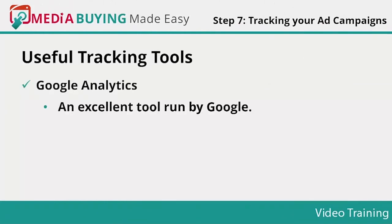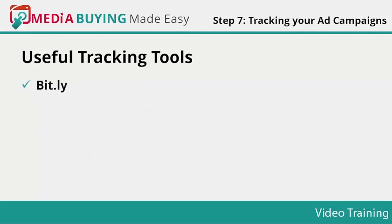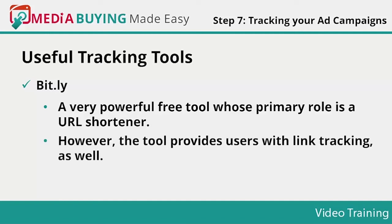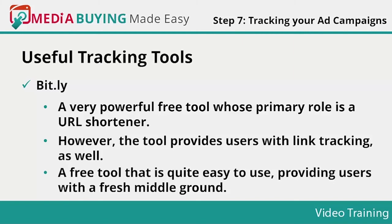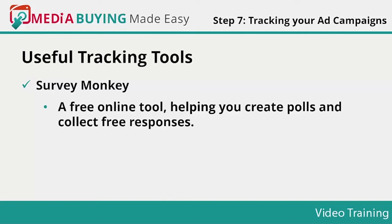URL tagging improves the value of every campaign — if you have set goals in your tracking tool, it reports on every specific campaign's conversion metrics. It's important that you neatly separate data in your tracking tool, otherwise data will not attribute to a particular channel. Useful tracking tools: Google Analytics — an excellent tool that allows users to grab vital information concerning their website visitors, tracking statistics including traffic sources such as paid search, organic search, and social media platforms, along with data about viewed pages, time spent on site, exit page, and demographic information. Bit.ly — a powerful free URL shortener that also provides link tracking, easy to use for individuals who don't have time to look keenly into statistics. Survey Monkey — a free online tool helping you create polls and collect free responses.